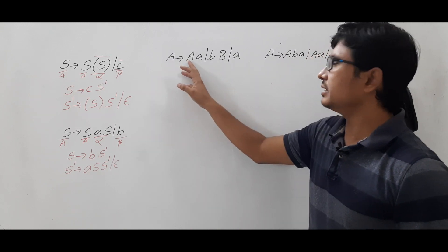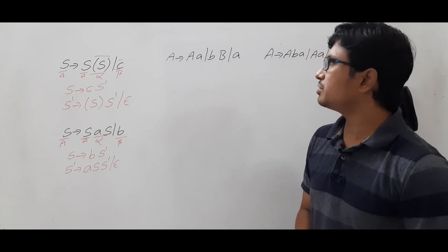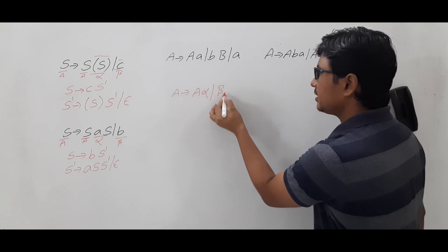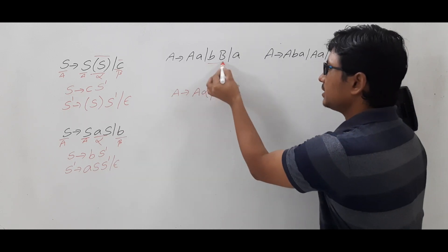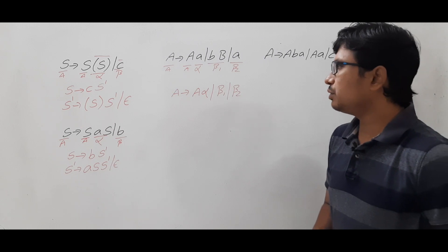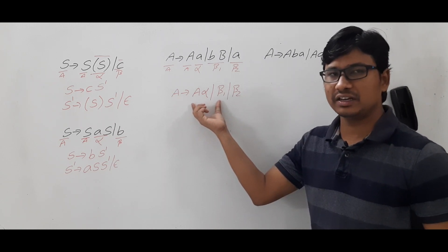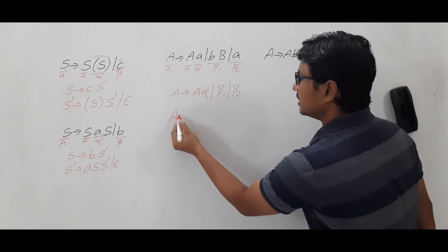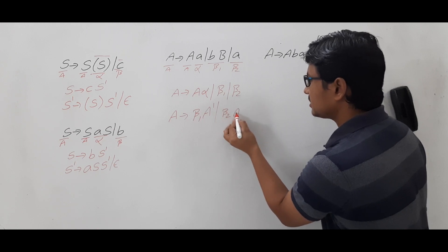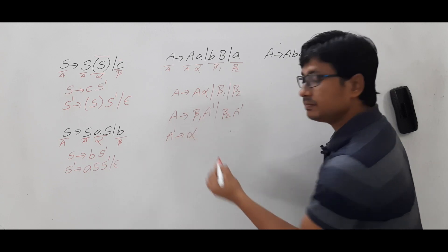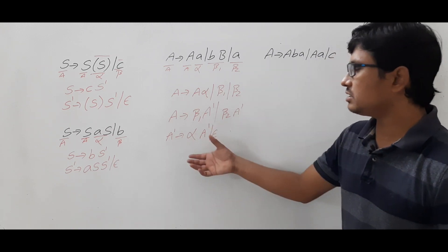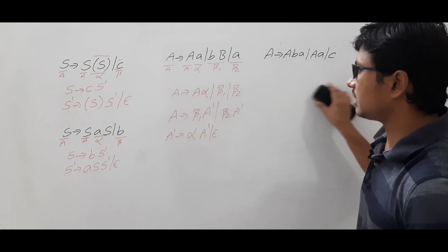Now we will see Example 3. First check whether it is a left recursion grammar or not. A → Aa, so there is a left recursion. If you check it, this is in the form of A → Aα | β₁ | β₂. This is beta₁, this is beta₂, this is A, and this is alpha. In the last video I discussed how to convert this: A → β₁A′ | β₂A′, and A′ → αA′ | ε.